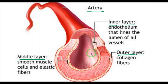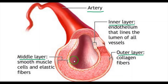Arteries are thick and elastic vessels. The role of the artery is to carry blood away from the heart to various organs of the body. All the arteries carry oxygenated blood. But there is one exception — the pulmonary artery, which carries deoxygenated blood to the lungs. So all arteries carry oxygenated blood, but the pulmonary artery carries deoxygenated blood to the lungs.